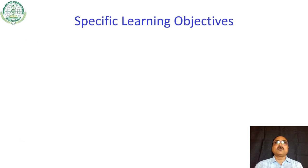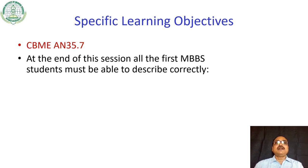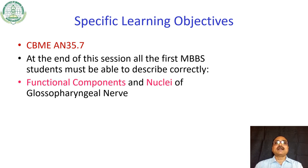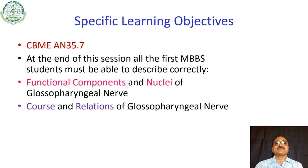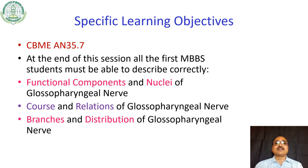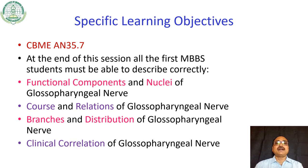The specific learning objectives of today's session are based on competency based medical education, AN35.7. At the end of this session, all first MBBS students must be able to describe correctly the course and relations of the glossopharyngeal nerve, branches and distribution, and clinical correlation of the glossopharyngeal nerve.